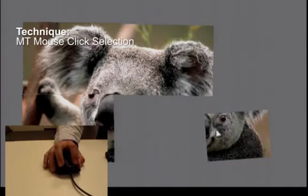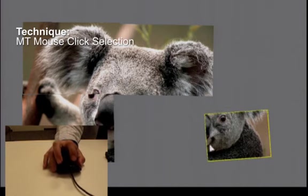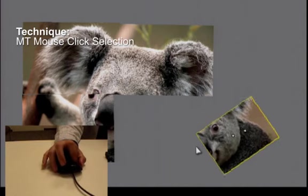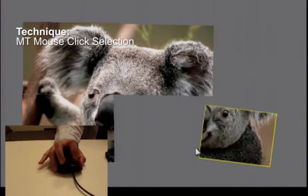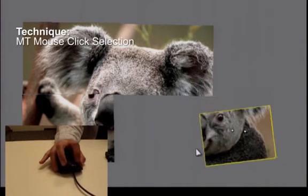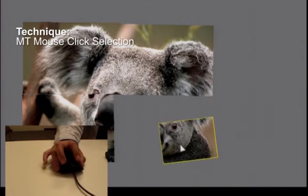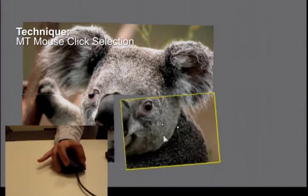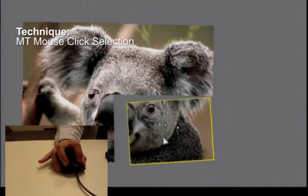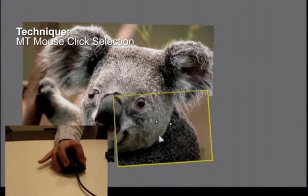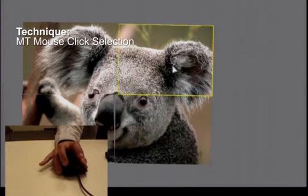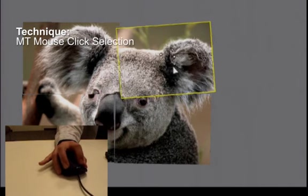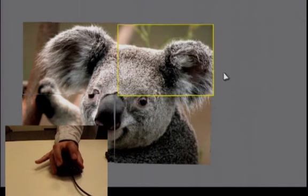In the MT Mouse Click Selection technique, objects are selected by traditional mouse selection. The user positions the mouse over the desired object and clicks to select it. Touches then manipulate the selected object regardless of mouse cursor position. To move an object, the user must click and drag with a mouse cursor. The touch points initiate scaling and rotation only. The selected object may be changed by clicking on another object or cleared by clicking on the background.